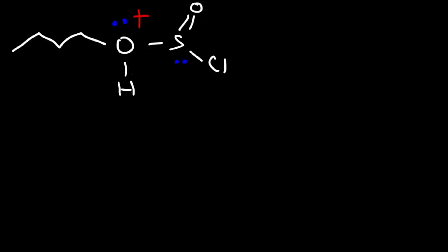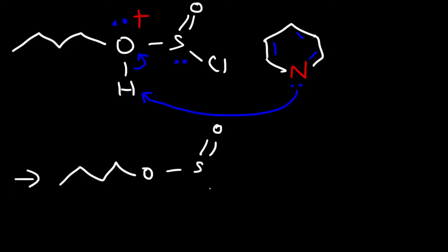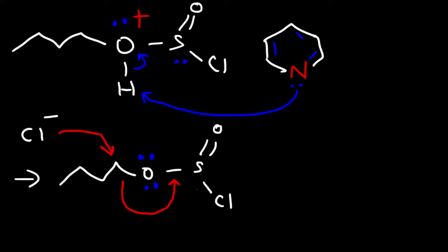This reaction is carried out in pyridine, a weak base, which removes the hydrogen from the oxygen. In the last step, the chloride ion attacks from the back, breaking the carbon–oxygen bond; those electrons form a pi bond between sulfur and oxygen, expelling the chloride group. This gives us our alkyl chloride product.